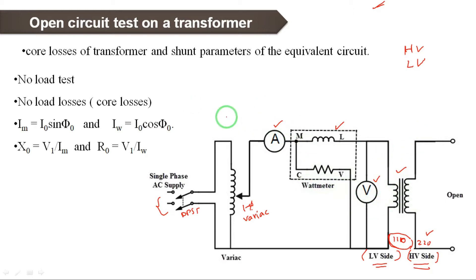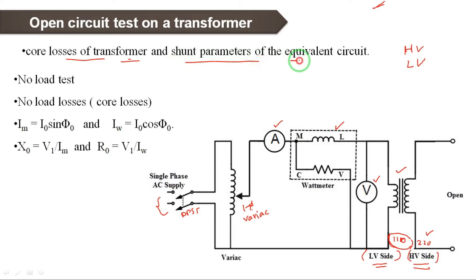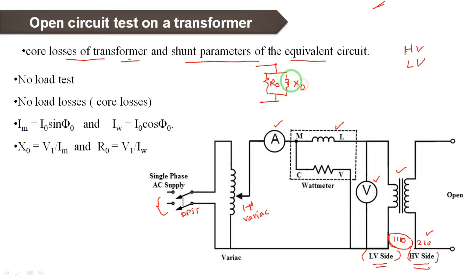By conducting this open circuit test, what we gain: first, the core losses of the transformer. Second, we will obtain the shunt parameters of the equivalent circuit. For the shunt parameters under no-load condition, we have R0 and X0 — these are the no-load components. So the open circuit test is also called the no-load test.